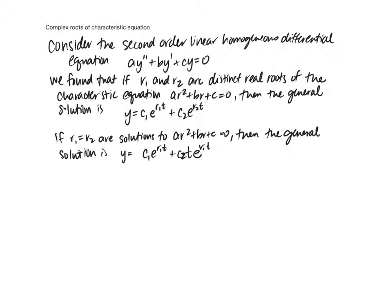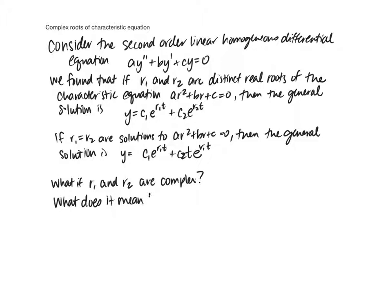So the next question is: what if r1 and r2 are complex? Well, if r1 and r2 are complex, then our solution will look something like e to the r1t — but what does it mean to raise e to a complex number? We're going to go back and think about the Maclaurin series.